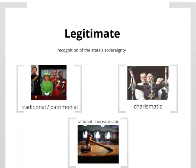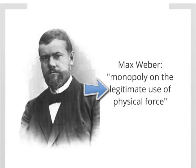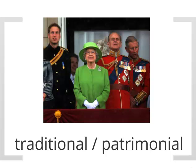Another important element of the state is that it is legitimate. Legitimacy entails that people within and outside of the state recognize the state's sovereignty — there is some aspect of the state convincing others that it is the entity that should actually rule that territory. This goes back to Weber's definition of the state as a monopoly on the legitimate use of physical force. A great majority of people need to see the state's existence as legitimate, and this can happen in three ways. The first is traditional or patrimonial legitimacy, which comes from bloodlines, divine right, or familial inheritance — as seen with the British royal family.